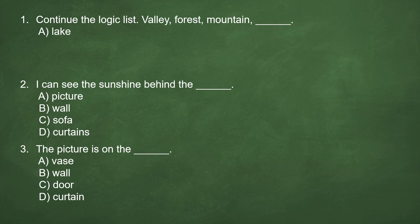Number 2. I can see the sunshine behind the blank. A. Picture. B. Wall. C. Sofa. D. Curtains. Answer: D. Curtains. I can see the sunshine behind the curtains.